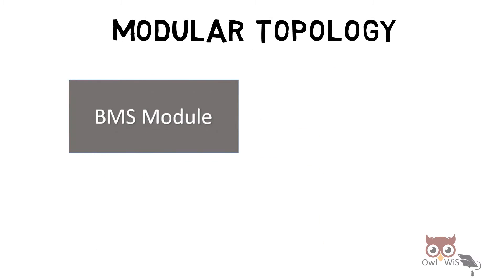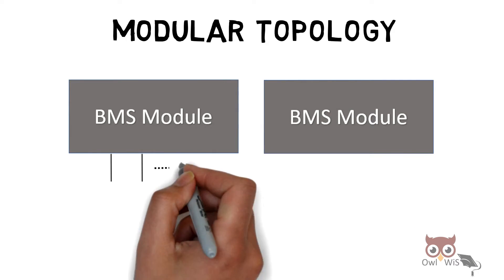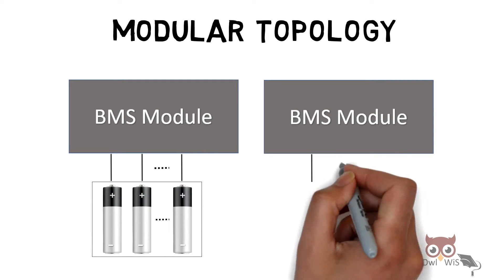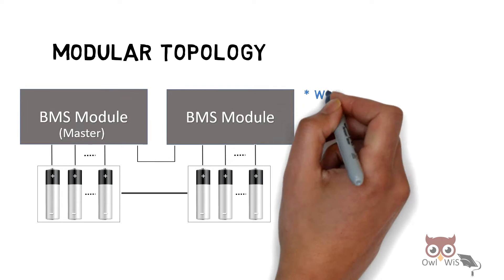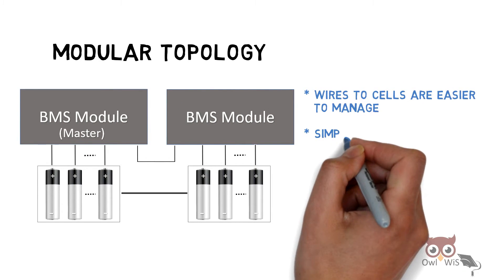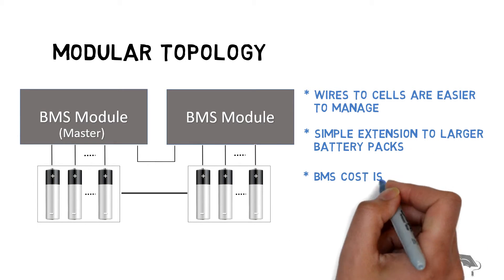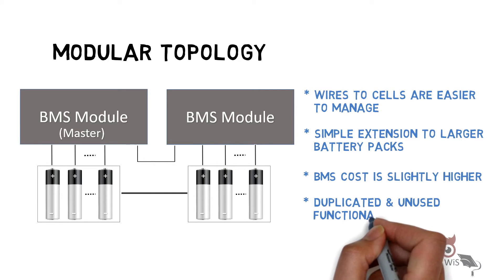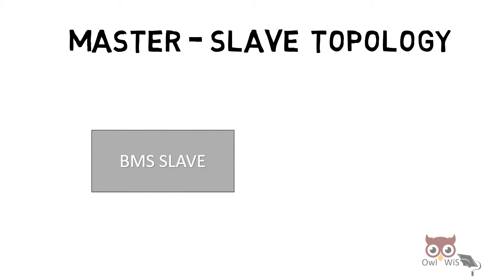Modular Topology: This is similar to centralized, but the centralized BMS is divided into BMS modules. Each module monitors some of the battery cells from the battery pack. One of the modules is termed as master, which monitors the entire pack and communicates with the remaining modules. Wires to cells are easier to manage, and simple extension to larger battery packs can be done. BMS cost is slightly higher, and duplicated and unused functionality is present.